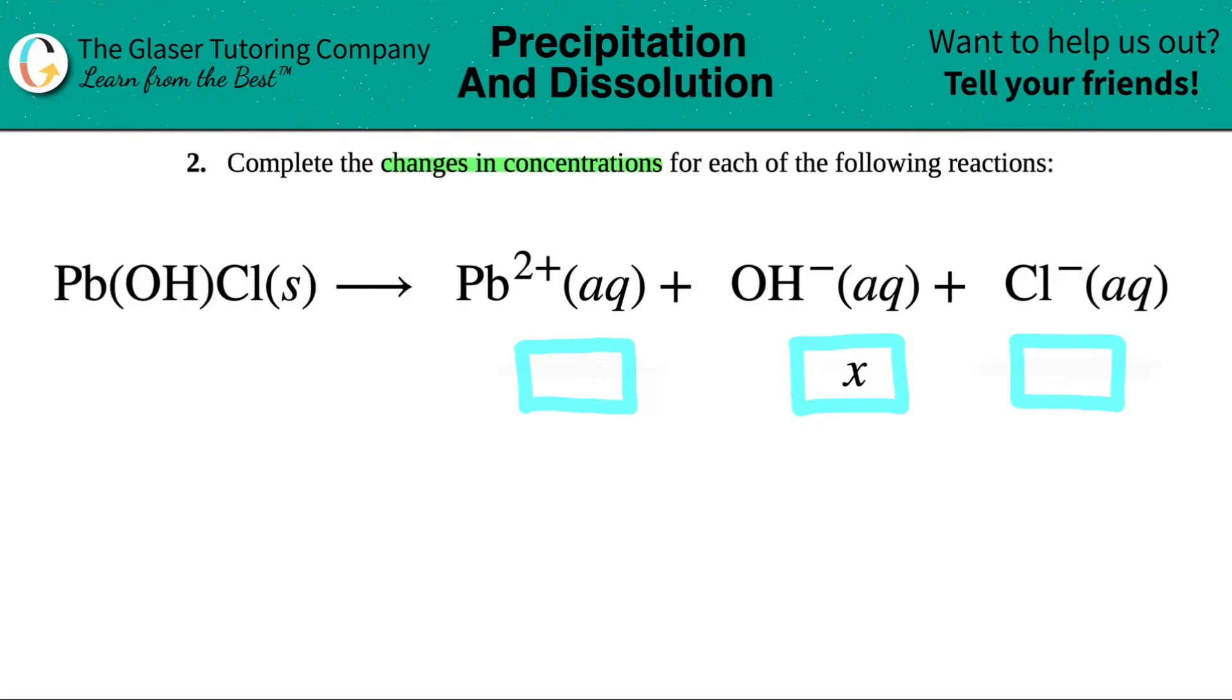Now this equation is balanced, that's always the first thing we have to worry about. Once it's balanced, you look at the big numbers in front of your ions. But for each one of them, I don't see any number. What does that mean? I just have one of them, right?